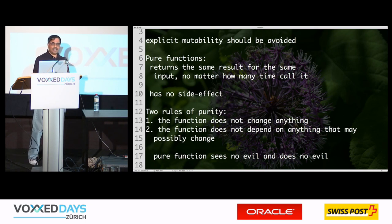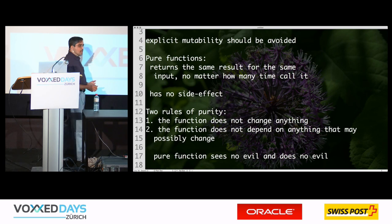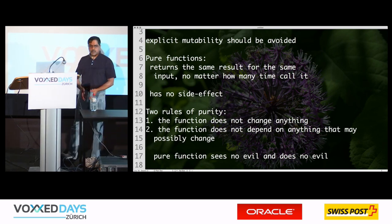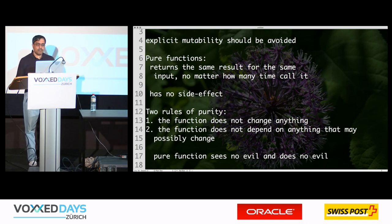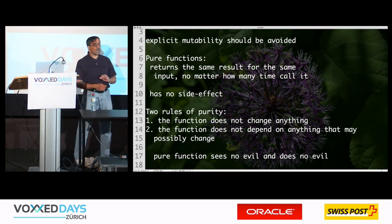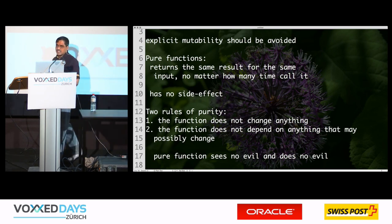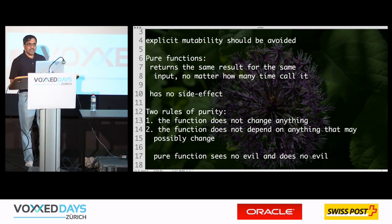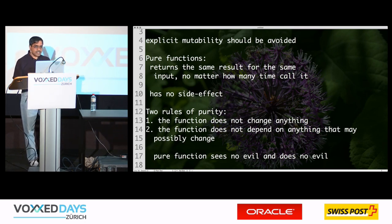Here's a slogan I like to use: a pure function sees no evil and does no evil, where I consider mutability to be evil. It's not enough that you don't do evil — you should not even see evil. If somebody is doing something really bad, you shouldn't encourage that either. So from the purity of functions, you don't want to mutate something, but you also don't want to depend on something that is being potentially mutated.